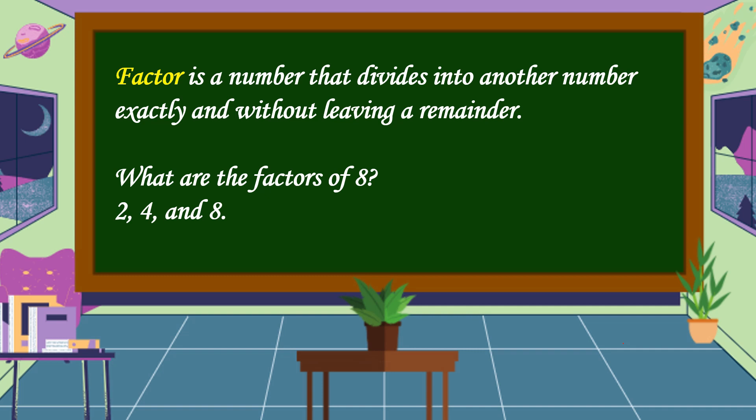8 divided by 2, the answer is equal to 4, and there's no remainder. 8 divided by 4, the answer is equal to 2, and also there's no remainder. 8 divided by 8, the answer is equal to 1, and we don't have a remainder.